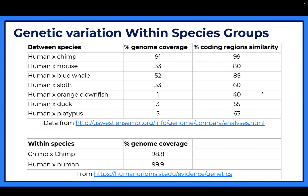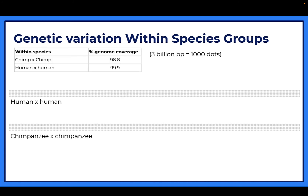Now we're going to look at genetic variation within a species group. For chimps, 98.8% of the genome is the same from chimp to chimp. For humans, 99.9% of our genome is the same across 100 different humans. That seems like a small difference - 98.8% to 99.9% - but it actually plays a significant role.